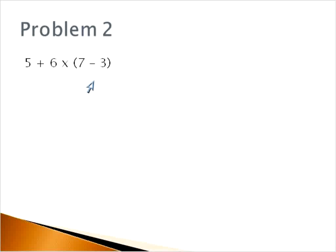Problem number 2, I gave us some grouping symbols. Whenever you see parentheses or grouping symbols, you'll solve what's inside those grouping symbols first. So 7 minus 3 is 4. Notice everything else stayed the same. 5 plus 6 times 7 minus 3 is 4.